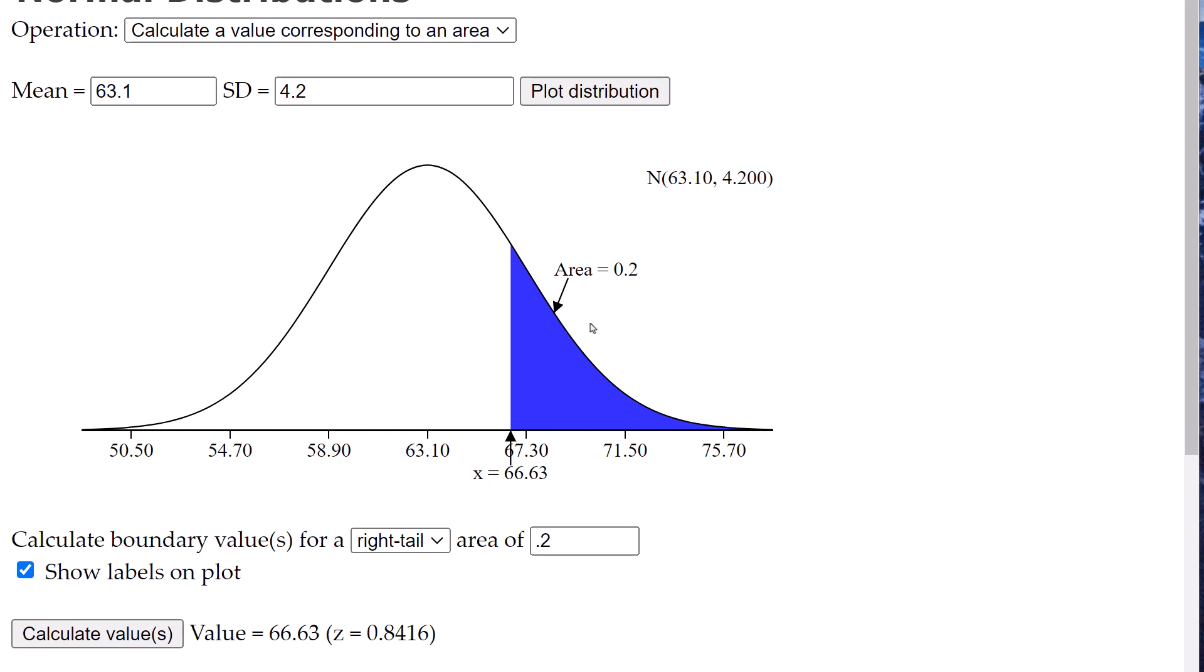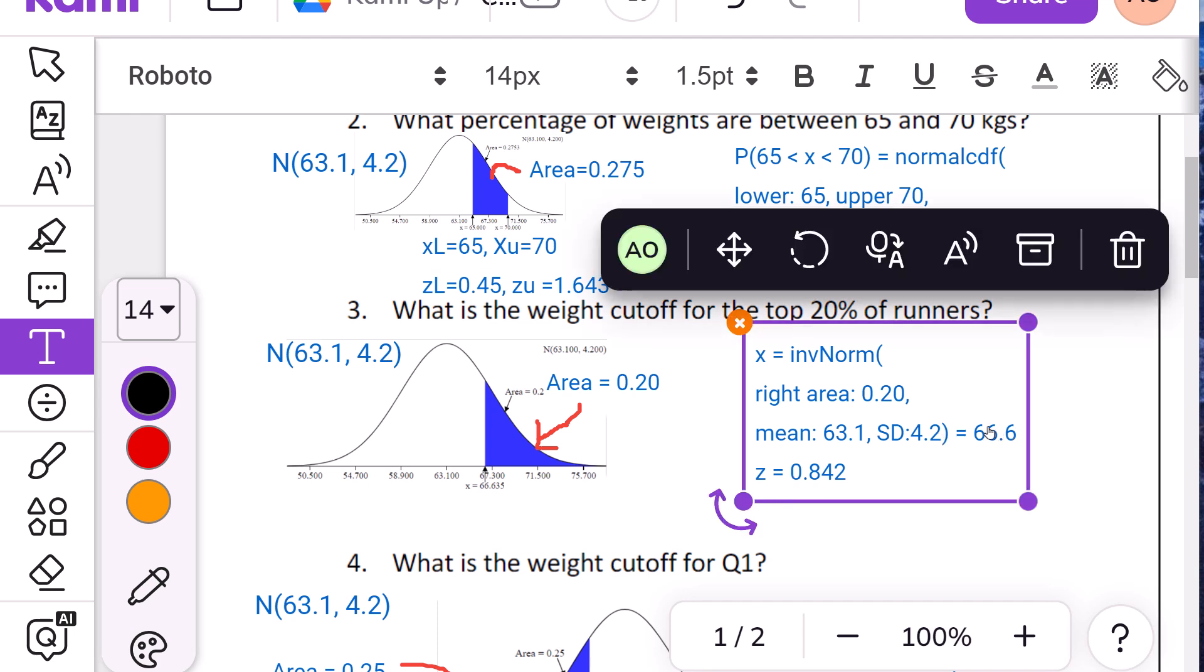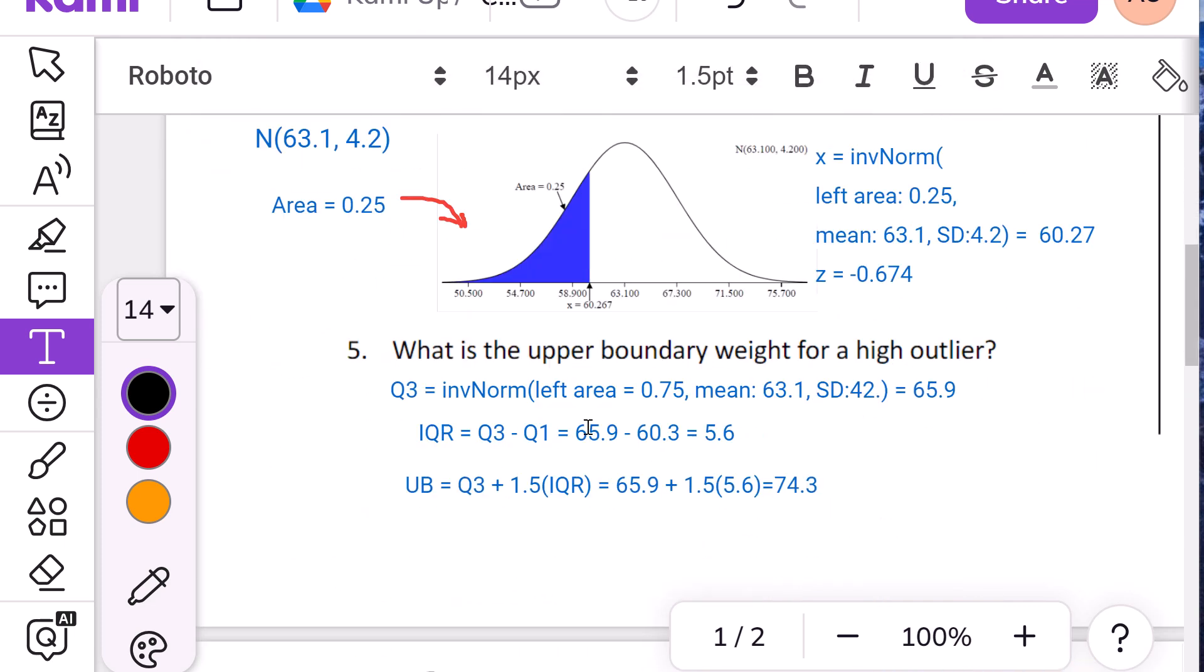And you can hit show labels on plot. So it shows a cutoff there, the area and the model, which is what I have here on the key. So the cutoff, I have the Z score. I just gave the Z score on the side. So the actual value is 66.6 kilograms.